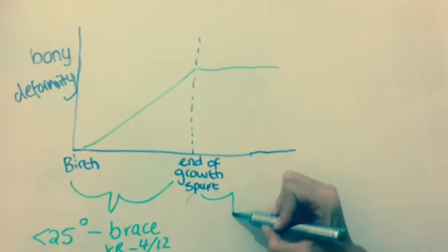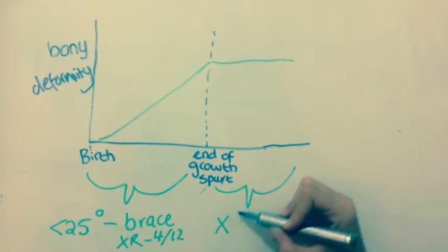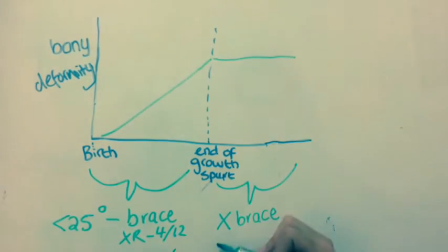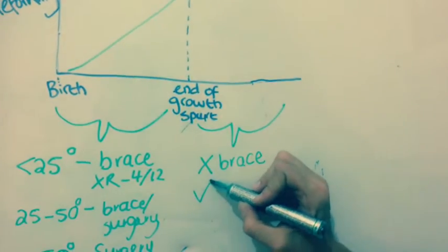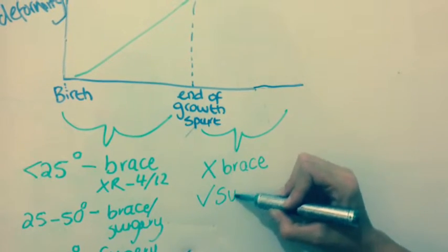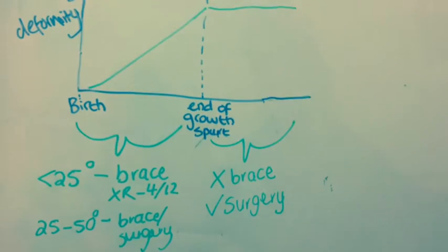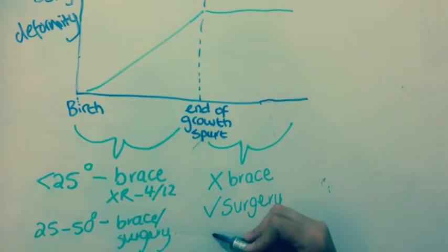After growth is completed, a brace is of no value as there is no growth to allow change of shape of the spine. The only effective treatment is surgery involving instrumentation and fusion if there is poor cosmesis, respiratory impairment, or pain.